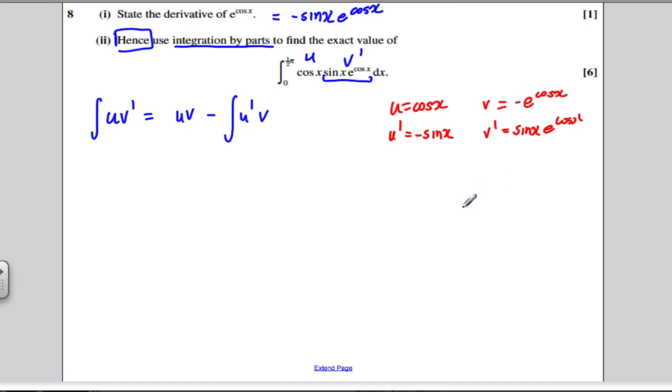Now this question is simply about substituting into this formula and evaluating the answer at the limits. Let's go straight on and have a go at it. u times v, cos x times this, I'm going to write that as minus cos x e to the cos x, and I'm going to evaluate this at 0 and pi over 2.